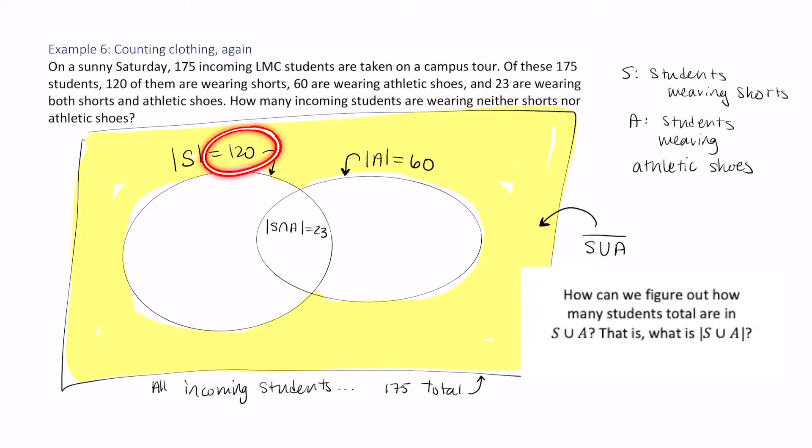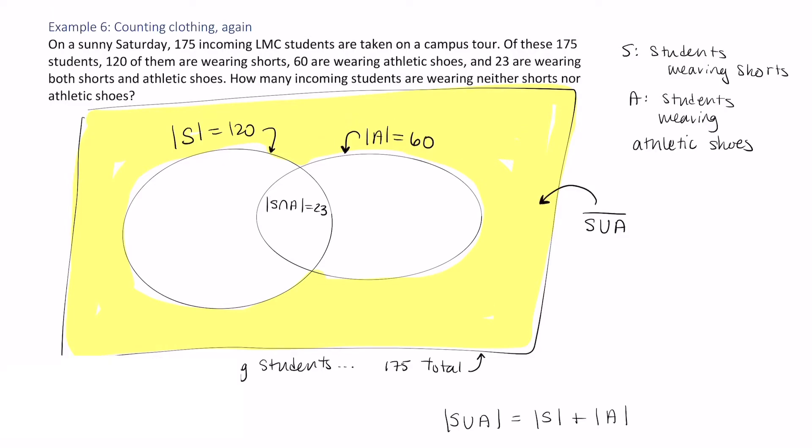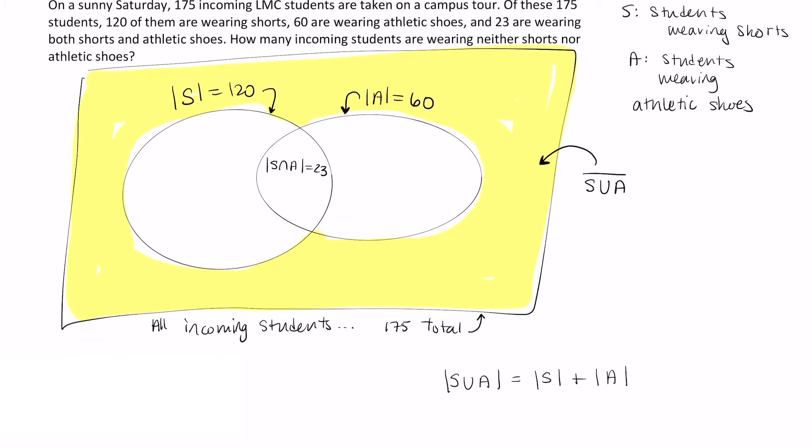Now, how can we figure out how many total there are? If I add up 120 and 60, I'll get 180, which is too many, since there are 175 students total. S union A. This set, we can add the size of set S and the size of set A. And that will get us 120 plus 60. This is more than 175, which is the total. What's the problem?